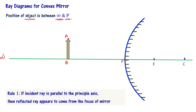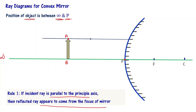Rule number one says that if the incident ray is parallel to the principal axis, then the reflected ray appears to come from the focus of the mirror. So let me draw a ray parallel to the principal axis from point A. This is the point of incidence — it has to reflect from there. To get the reflected ray angle, I draw a line from the focus to the point of incidence and continue that line. This is the reflected ray; it looks like it is coming from point F.